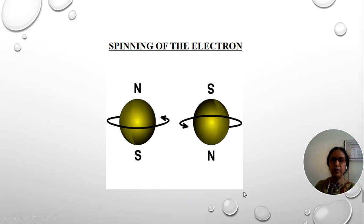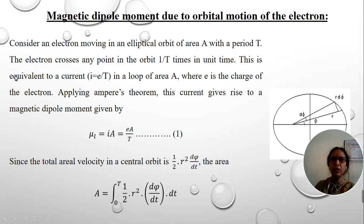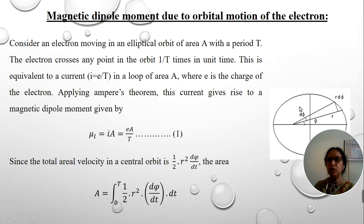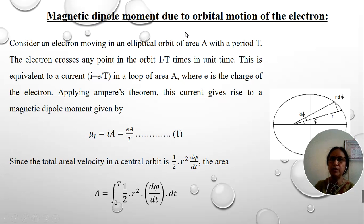So this is all about the vector atom model. Next, I will explain the derivation of magnetic dipole moment due to the orbital motion of the electron. Consider an electron revolving in an elliptical orbit with the nucleus at one of its foci. According to Ampere's theory, the moving electron in a closed loop constitutes an electric current. Whenever there is an electric current, there must be a magnetic field. So whenever the electron is moving in its orbit, it possesses a magnetic dipole moment due to its orbital motion.